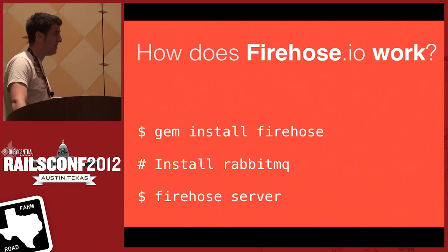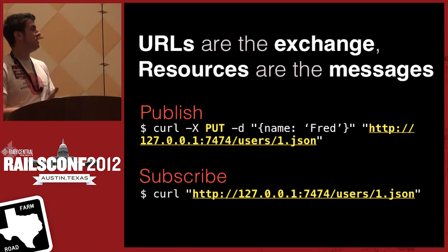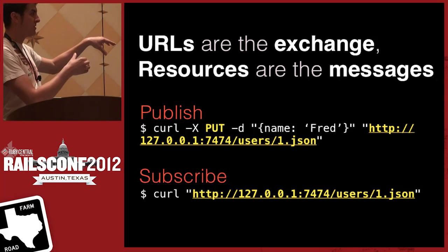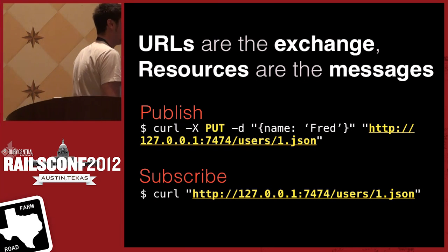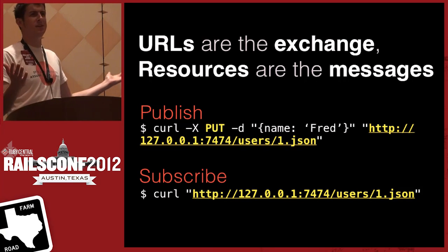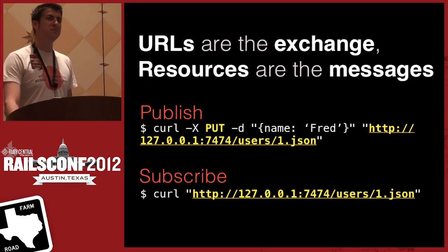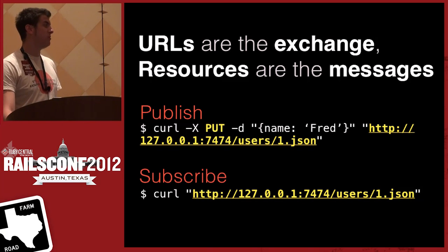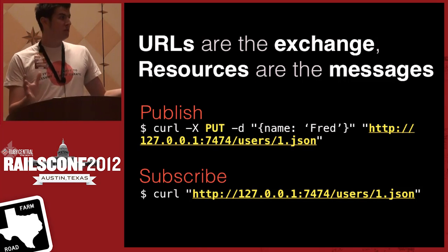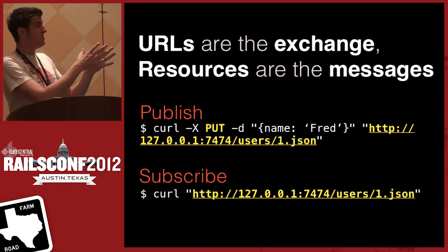The API you end up with looks like this. It uses HTTP and also WebSockets as a transport for a PubSub server, with simple ways to publish and subscribe to data. It all works over curl — if you build something on the web that doesn't work with curl, it's too complicated. URLs are the exchange — that's what you publish to and subscribe to. You don't have to think about channel topology at all. You just plan out your resources, and it's pretty trivial to start pumping resources out over this thing.